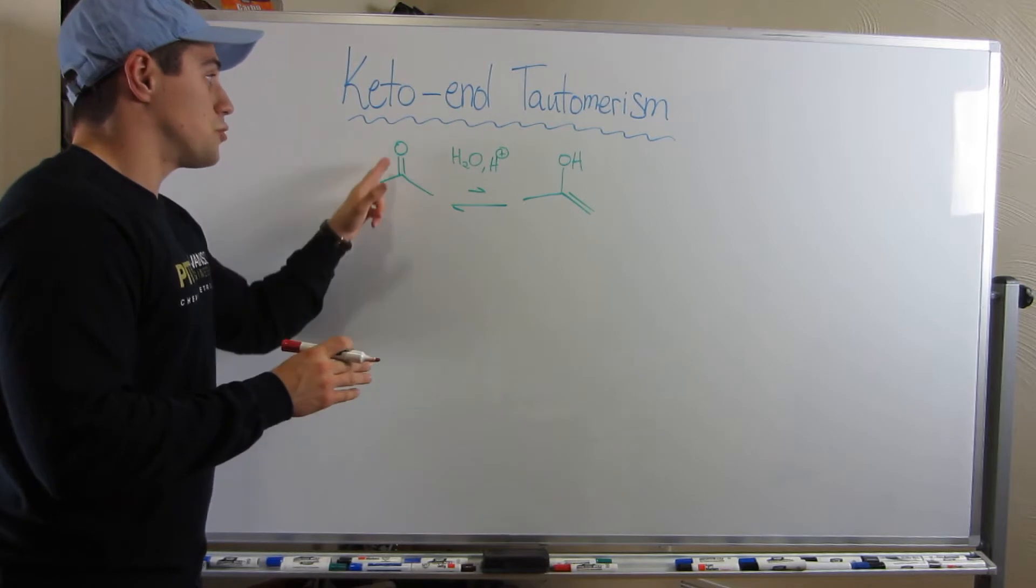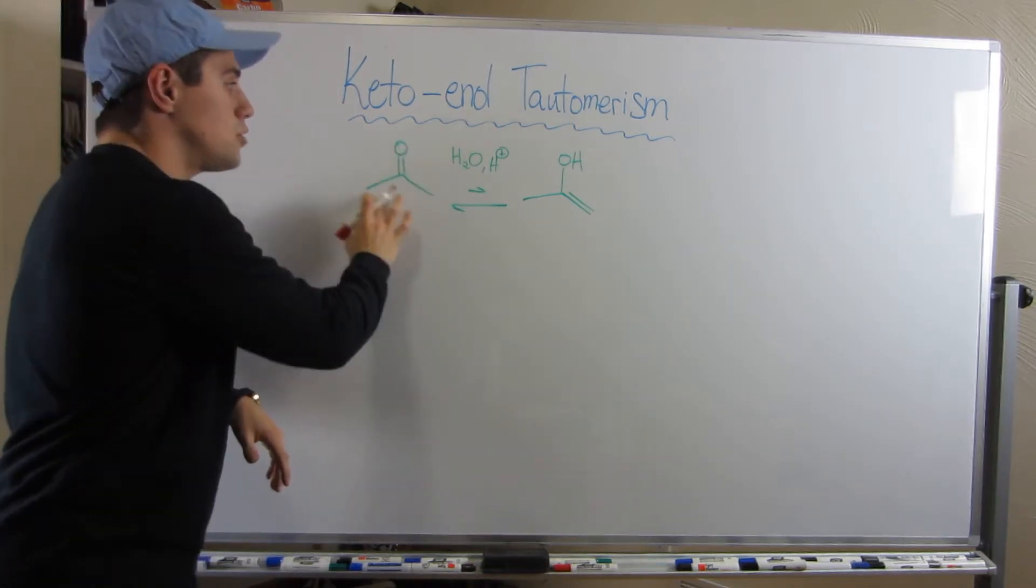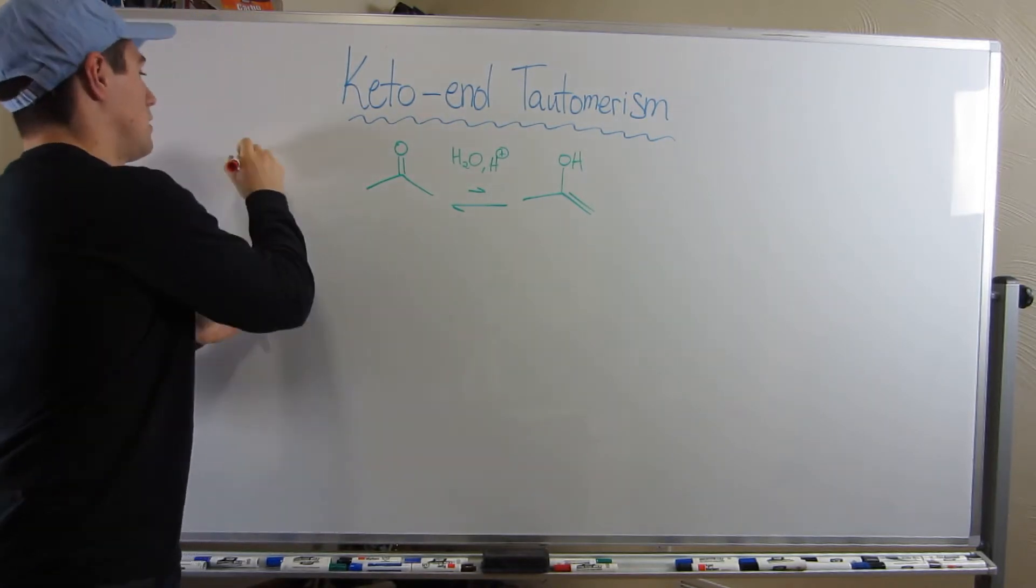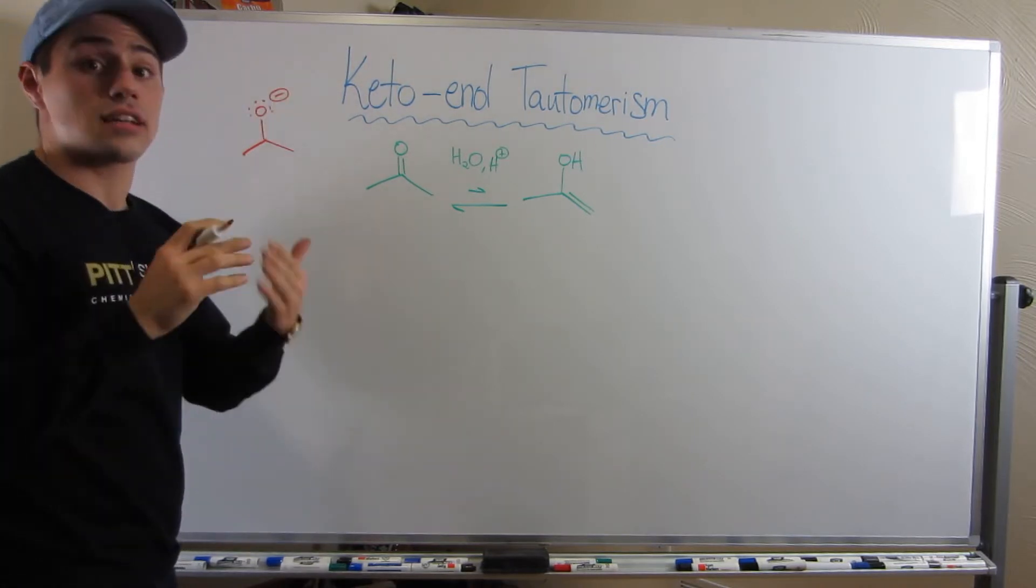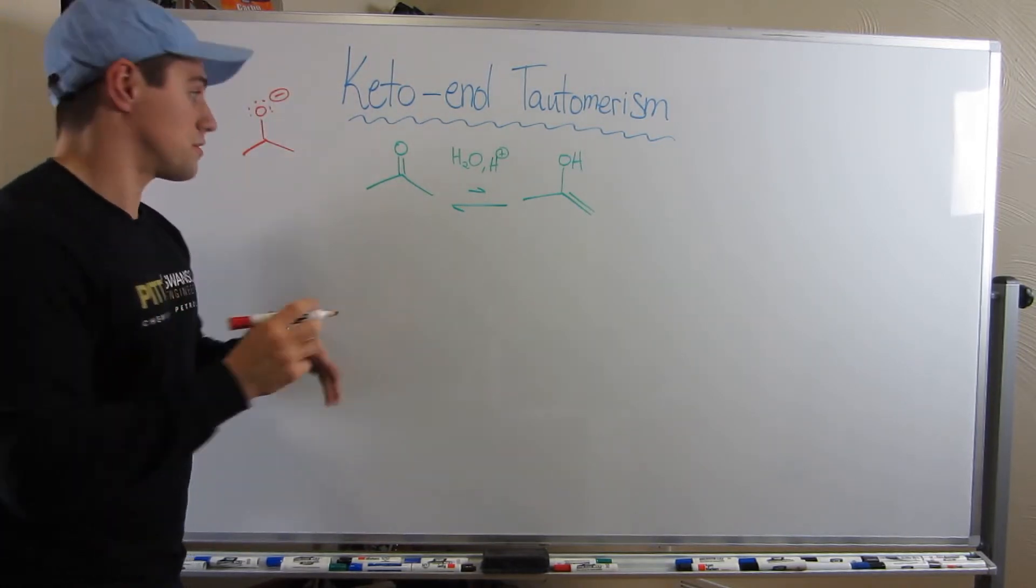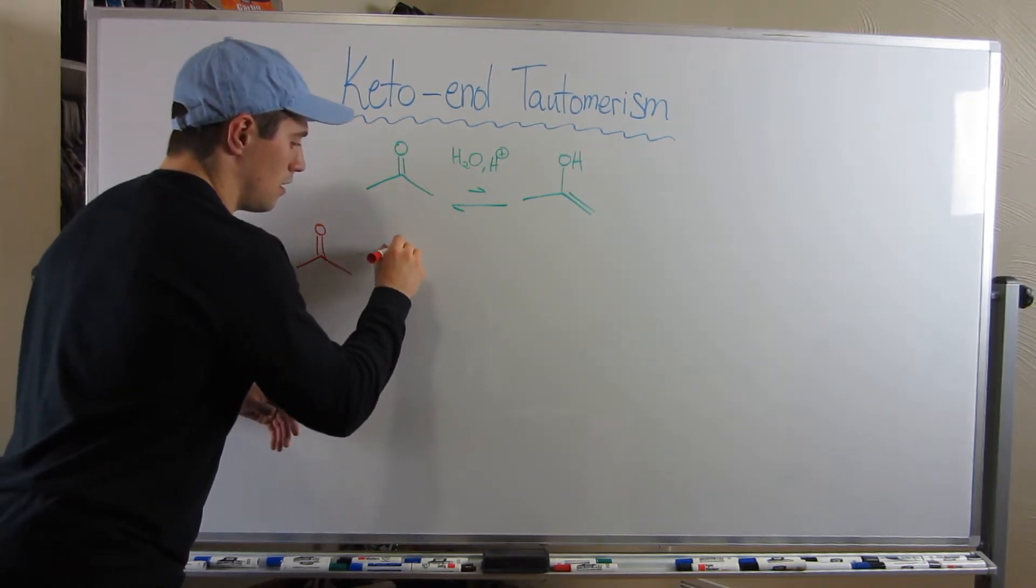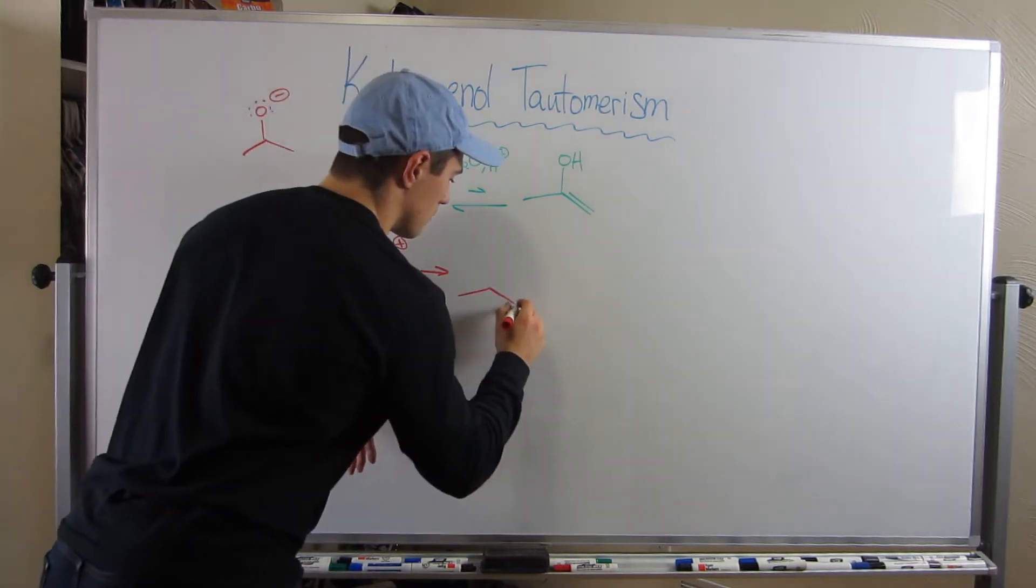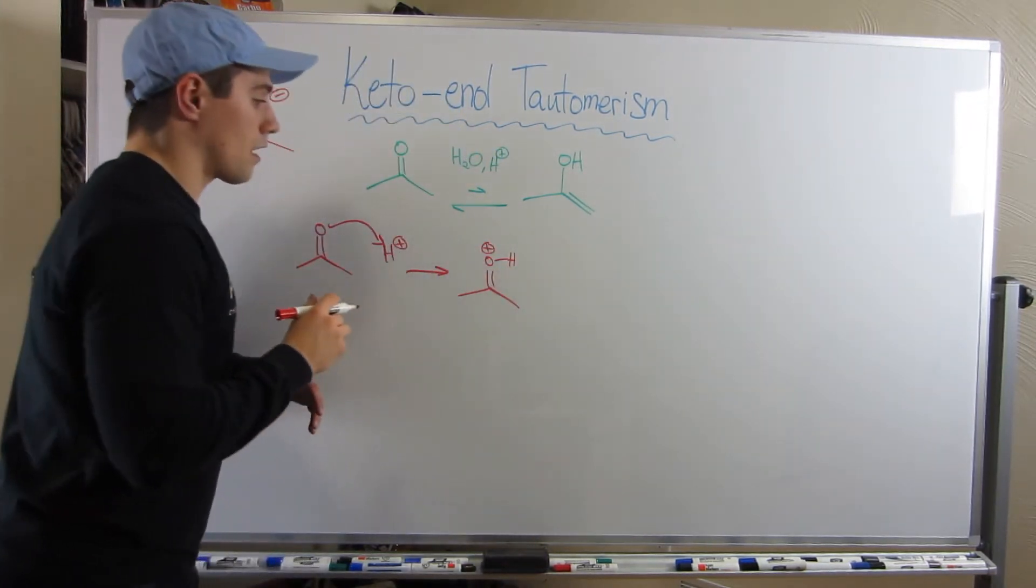Your very first step is to protonate. So we're in an acidic environment—we see H+. We need to protonate our carbonyl oxygen. We saw through the resonance, he has a negative charge. In an acidic environment, he's going to love to grab H+. So let's do that.